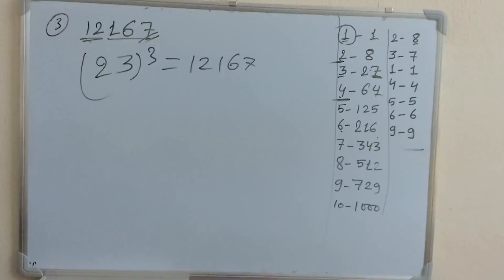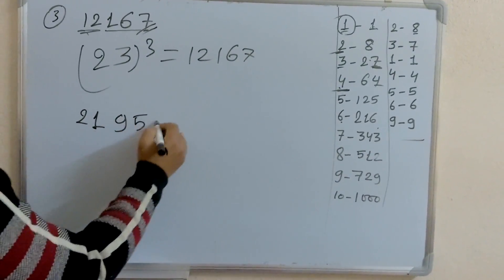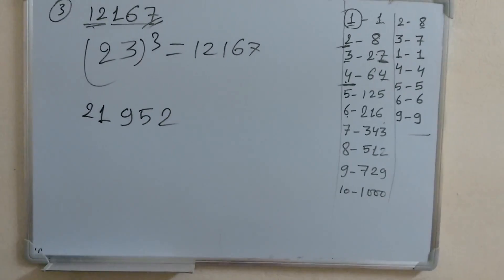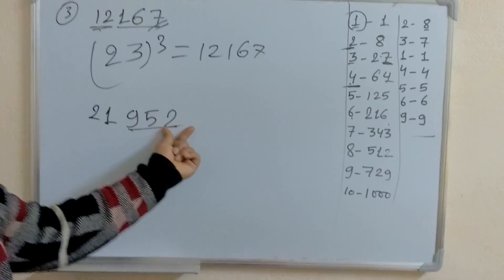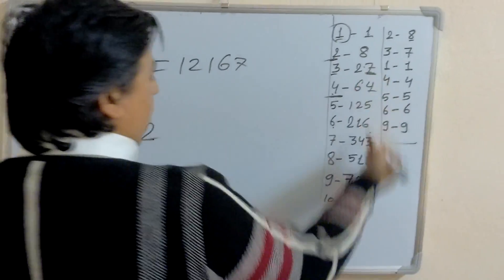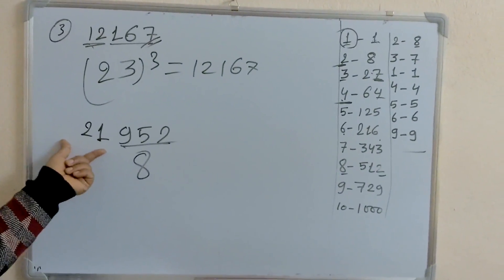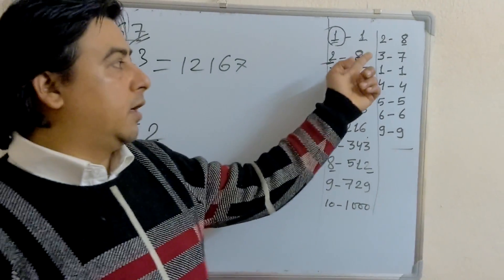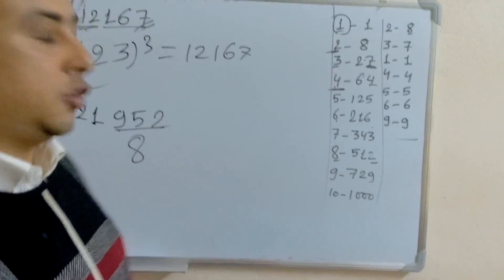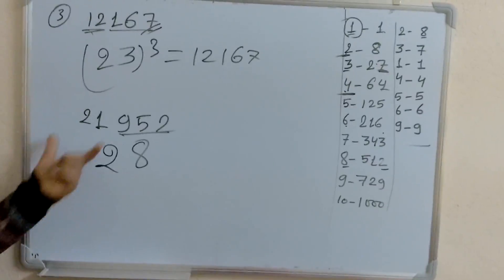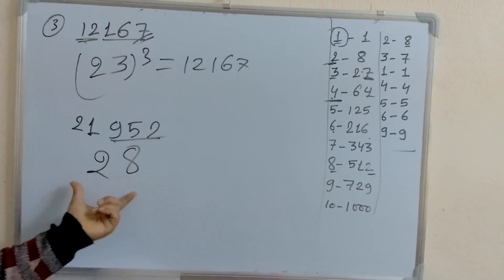Let's take the next example: 21952. Take the last 3 digits — 952. The last digit is 2, which corresponds to 8 cube, so write 8. The remaining number is 21, which lies between 8 and 27, so take the smallest one — that is 2. Therefore, the cube root of 21952 is 28.